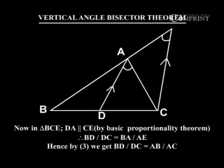Now in triangle BCE, DA parallel to CE by basic proportionality theorem. Therefore BD by DC equal to BA by AE. Hence by 3 we get BD by DC equal to AB by AC.